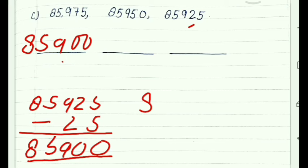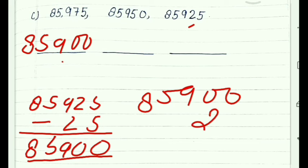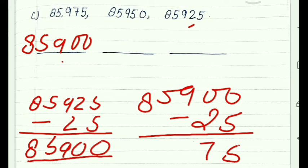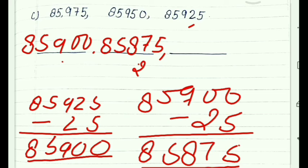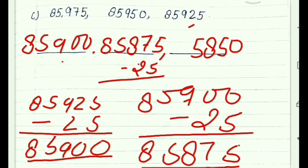Now previous number 85,900 minus 25: 10 minus 5 is 5 (taking carry), 9 minus 2 is 7, 8 and 5 as it is - next number is 85,875. Then previous number minus 25: 5 minus 5 is 0, 7 minus 2 is 5, 8 as it is, 5 as it is, 8 as it is - so required next number is 85,850.